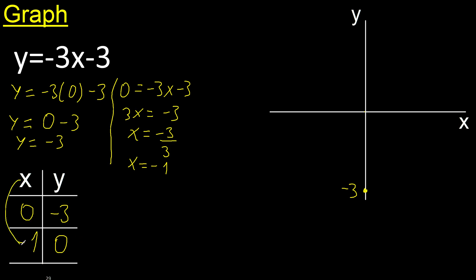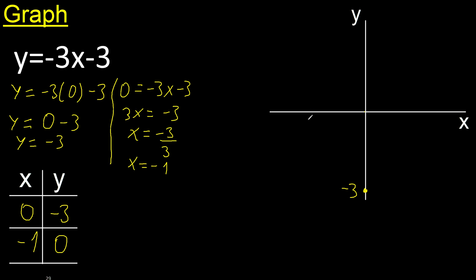x is negative, negative, positive — therefore minus 1 is here. y is 0, 0, minus 1, therefore point is here.